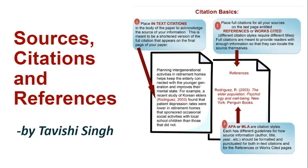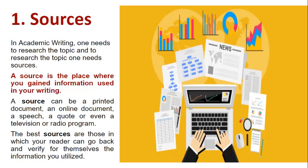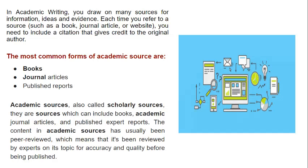Let's talk about the sources of academic writing. In academic writing, one needs to research the topic, and to research the topic, one needs sources. A source is the place where you gained information used in your writing. A source can be a printed document, an online document, a speech, a quote, or even a television or radio program. The best sources are those which your reader can go back and verify for themselves. The most common forms of academic source are books, journal articles, and published reports.